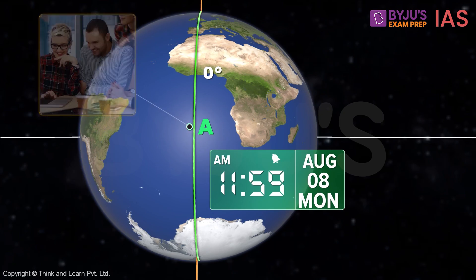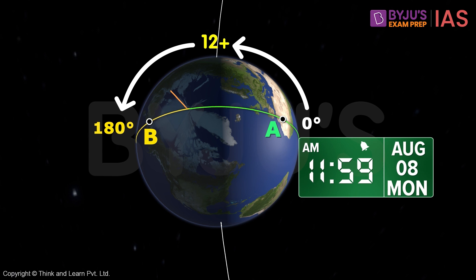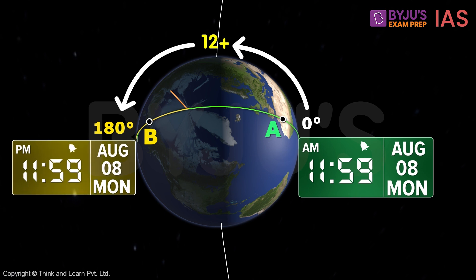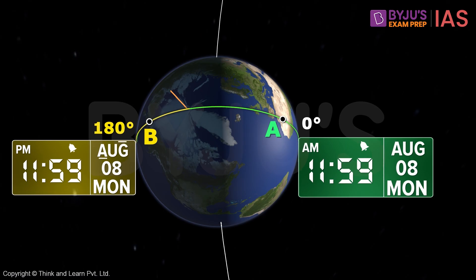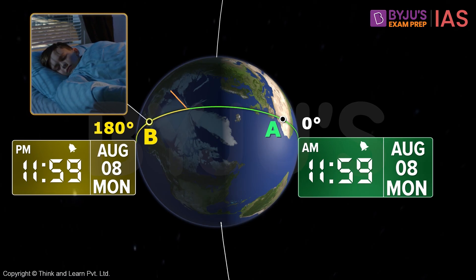Now exactly opposite to this point is this place — let's call it point B. What would this longitude be? Exactly opposite to the zero degree longitude will be the 180 degree longitude. The time here would be exactly 12 hours ahead of point A, which is 11:59 PM, but still Monday, 8th of August. This means most people in this part of the world would have already ended their day and would probably be asleep.